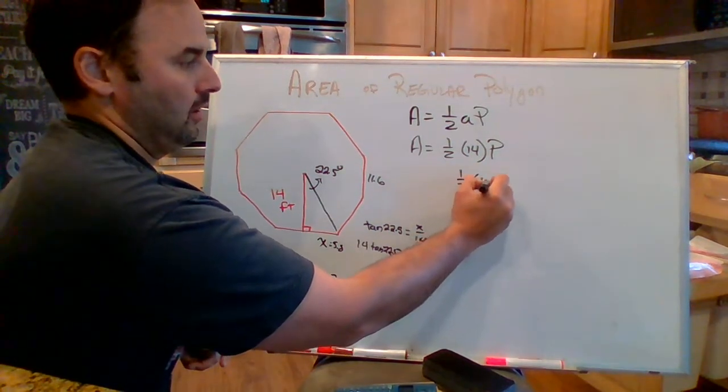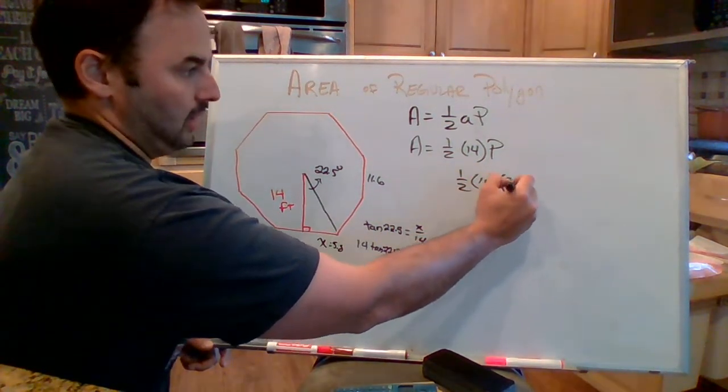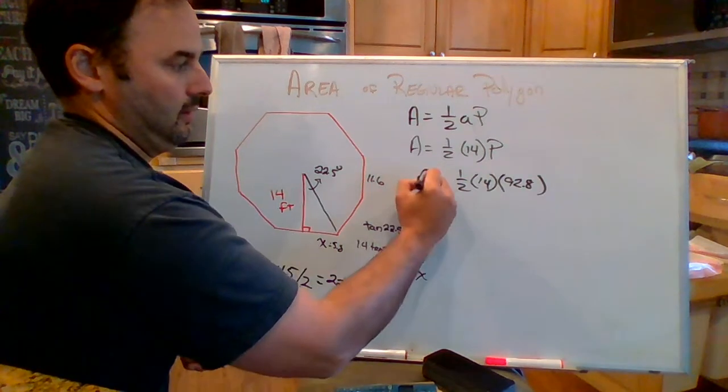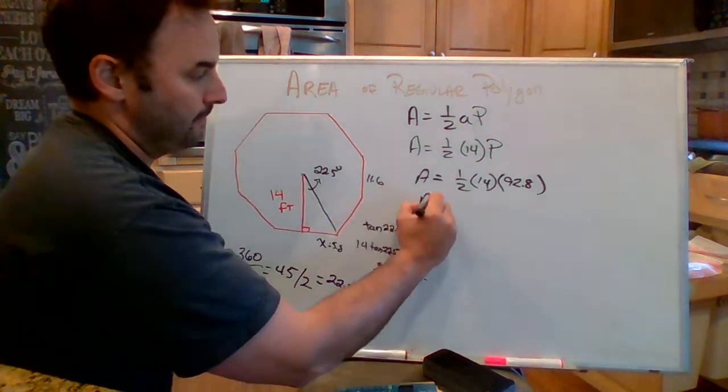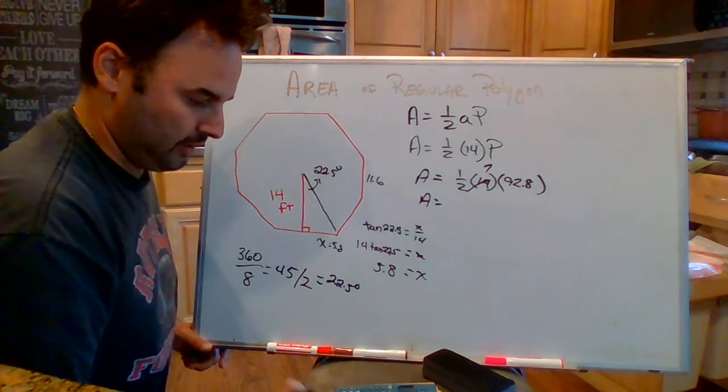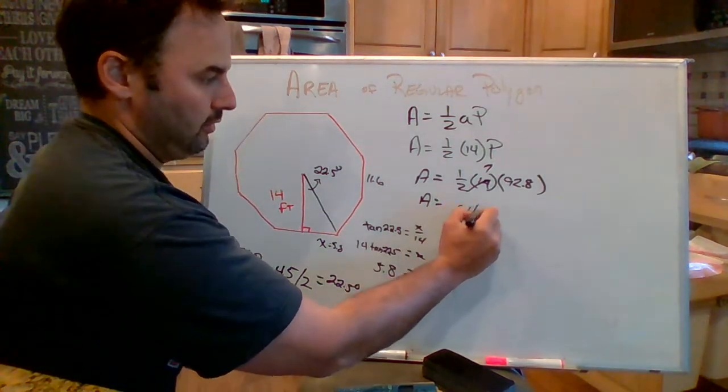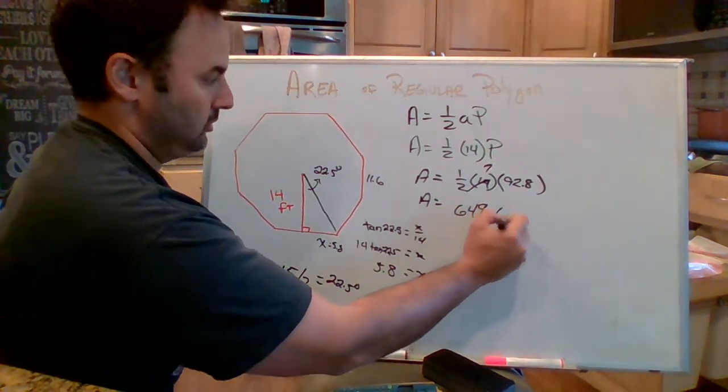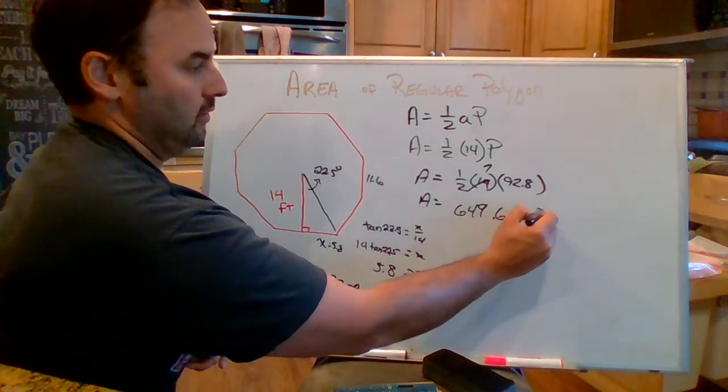So it's 1 half, 14 times 92.8. And 1 half of 14 is 7. 92.8 times 7. 649.6 feet squared.